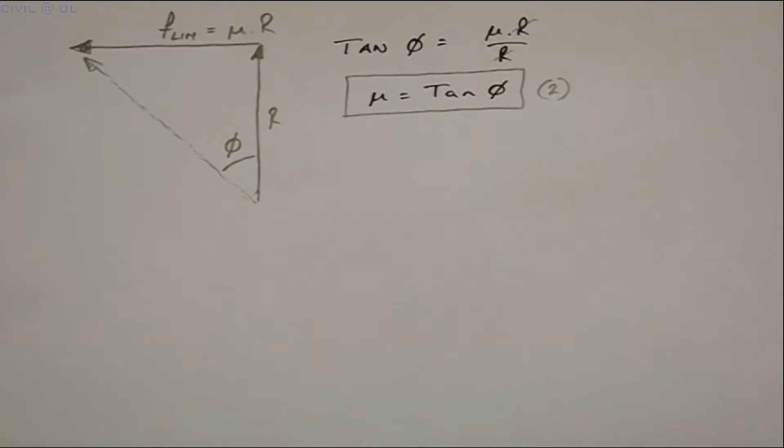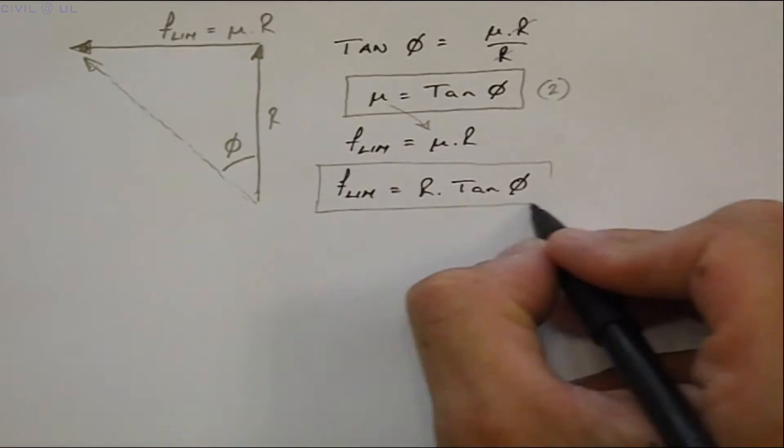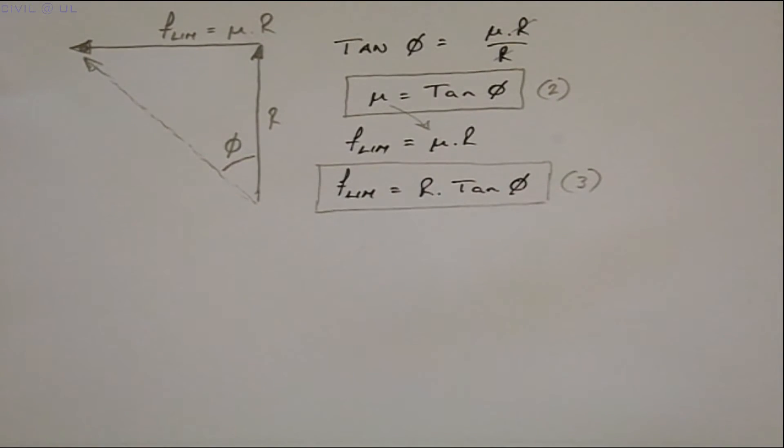So we can write the force causing sliding, or failure, is equal to R times the tan of phi. And for an element of soil, it's normal to express this relationship in terms of stresses. So dividing by the area of the failure surface, the blocks area in this case, we get,